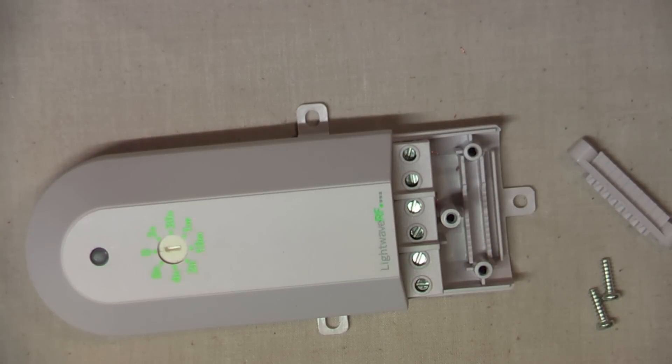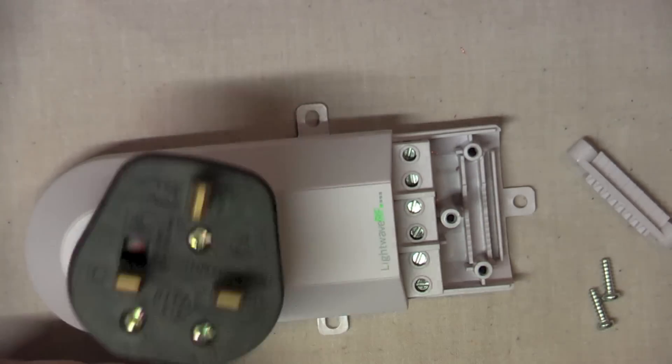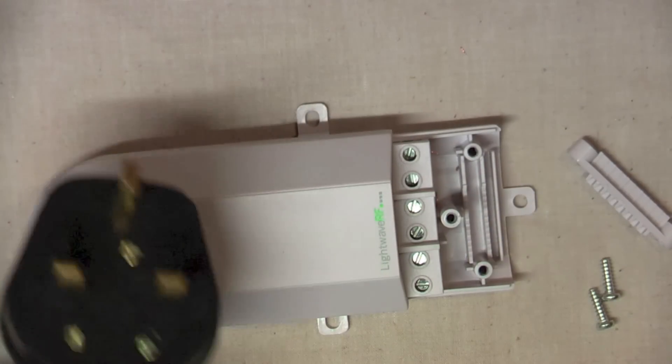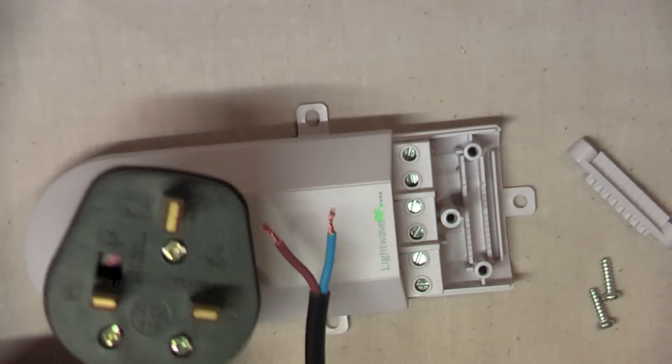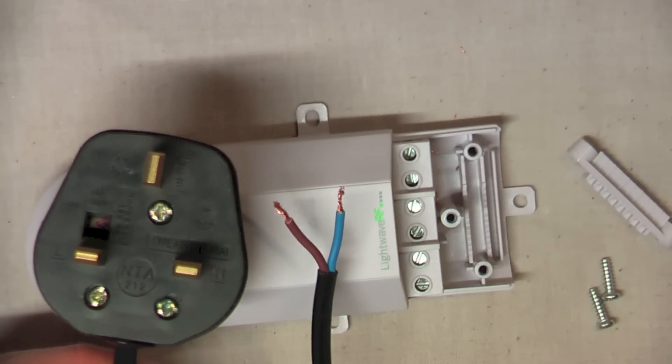Now, what I've got is a table lamp. Here's one I prepared earlier, as they say, and I've taken off the plug. So we've got two standard wires in there. I've recycled the plug onto a new piece of cable. There's a plug, you should all have seen one of those before. And on the other end of the piece of cable, I've bared the wires ready to go into the relay.